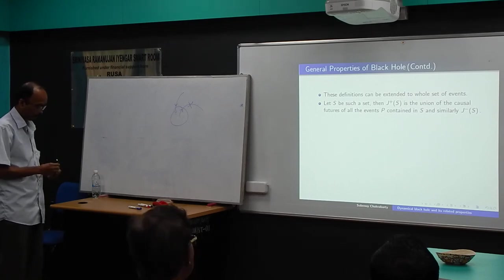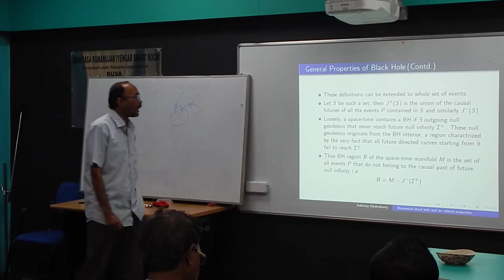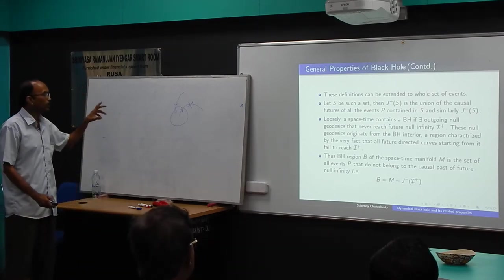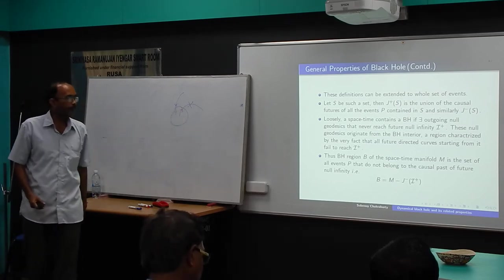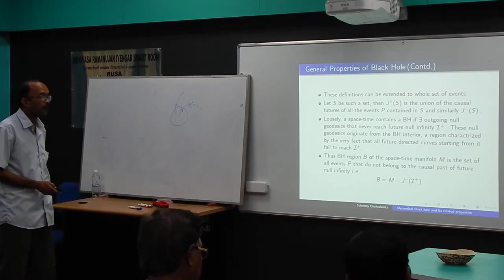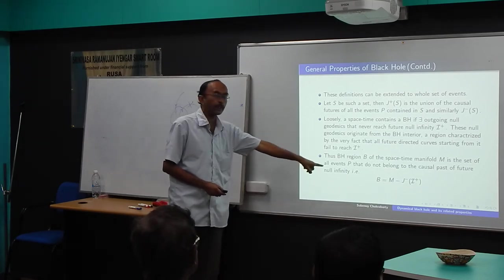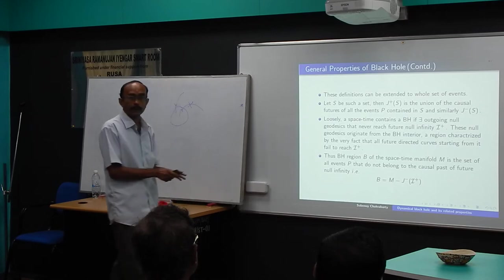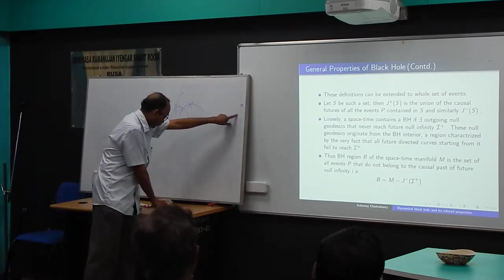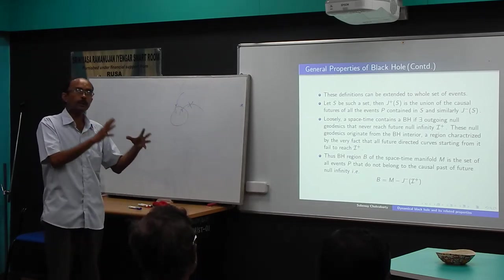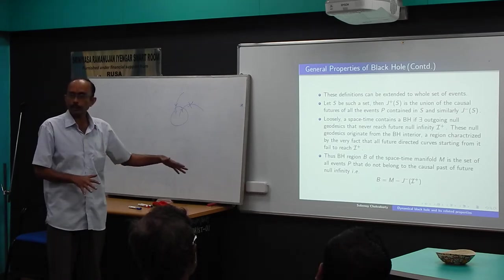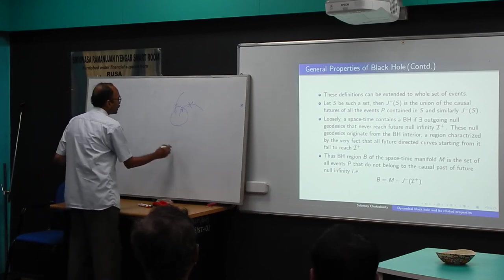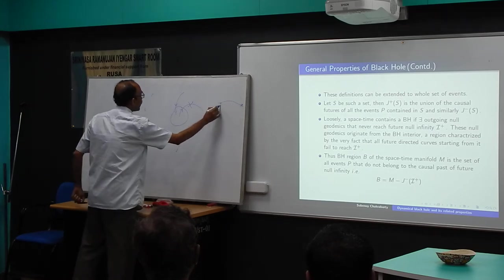Now I define the black hole mathematically. I have the spacetime manifold M. The black hole region B is defined as the set of all events which do not belong to J⁻(I⁺), the causal past of future null infinity I⁺. J⁻(I⁺) means all events connected to null infinity from the past — all events outside the black hole, because from there a light ray can go to infinity.